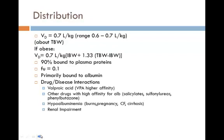Volume of distribution is 0.7 liters per kilogram, right at total body water. In obese patients, you would adjust the volume of distribution by adding a portion of fat weight — this is shown in the dosing weight equation here, and it differs from the adjustments used for aminoglycosides or creatinine clearance. Phenytoin is 90% bound to plasma protein, specifically albumin.